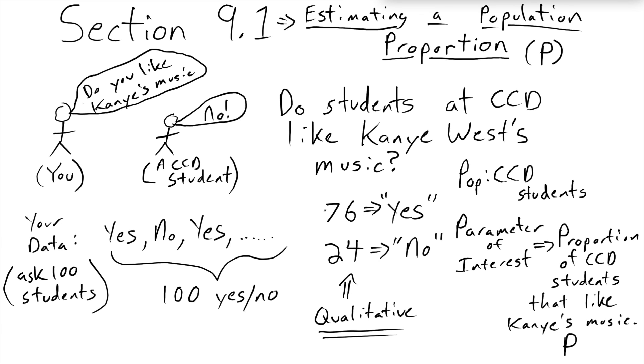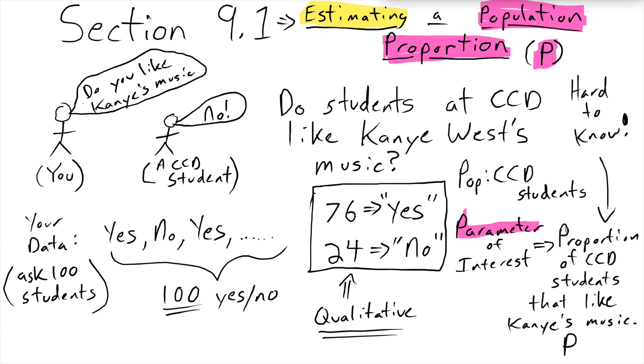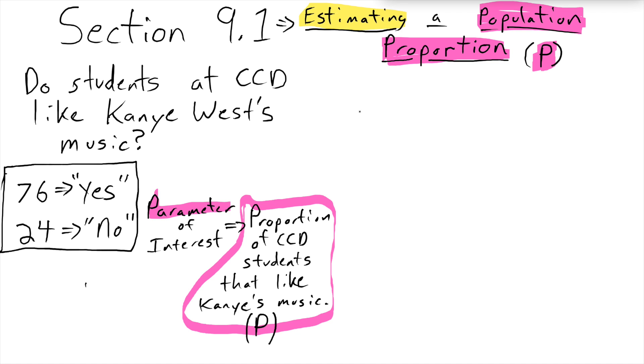You want to estimate this thing and you recognize that your parameter here is referring to over 10,000 people and actually knowing what this P is, you would have to ask everybody at CCD. You didn't do that. You only asked 100 people. So you're going to be estimating this population proportion, this capital P, this parameter. The first thing you do is recognize that the sample proportion estimates the population proportion. You remember that you asked 100 people total and 76 of those people said that they did like Kanye's music, which gives you a sample proportion of 76%.